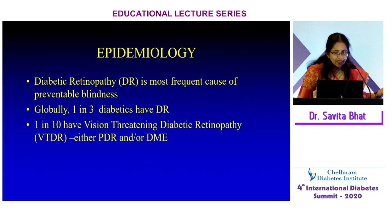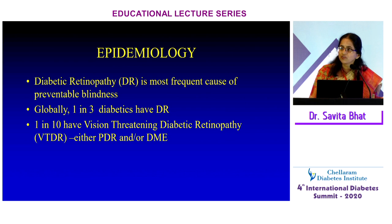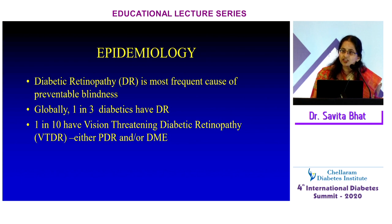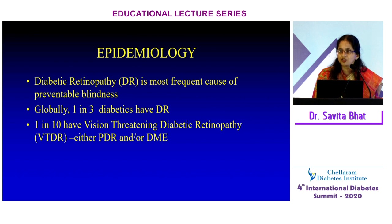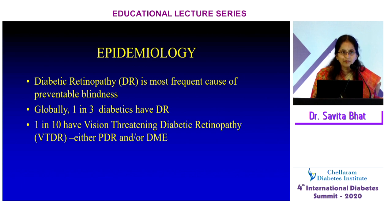Emanating from the optic nerve is the central retinal artery and vein in both the superior and inferior arcade. Diabetic retinopathy is the most frequent cause of preventable blindness, mostly in the working population. Globally, one in every three diabetics is said to have diabetic retinopathy, and one in every ten has vision-threatening diabetic retinopathy — either proliferative diabetic retinopathy or diabetic macular edema. The burden in India is 3 to 4.5 million diabetics having vision-threatening diabetic macular edema.